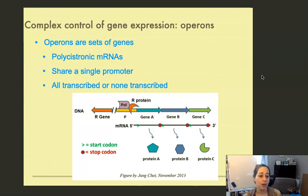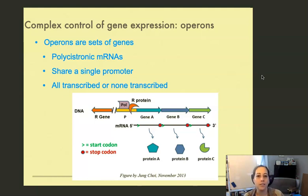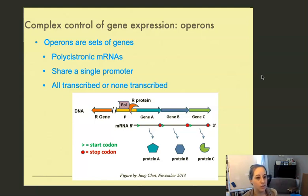We're going to talk about how the expression of operons is controlled in bacteria. Operons are sets of genes on a bacterial chromosome and they produce polycystronic mRNAs, which means that all the genes are on one piece of mRNA. They share a single promoter and they also share a single transcriptional terminator.